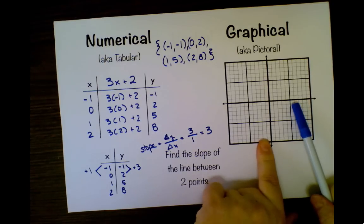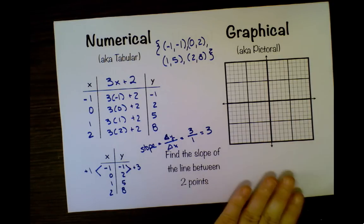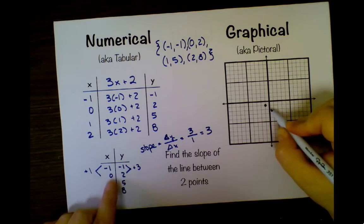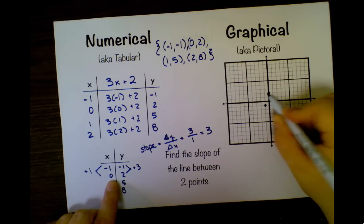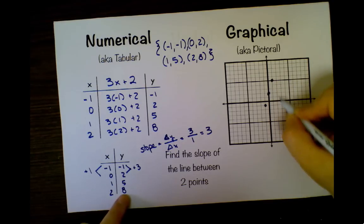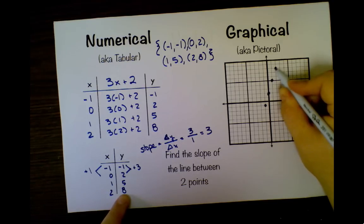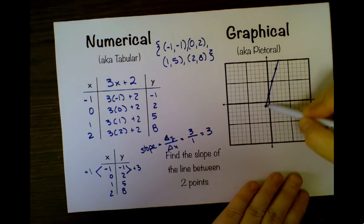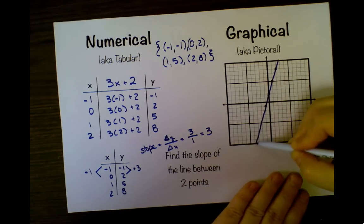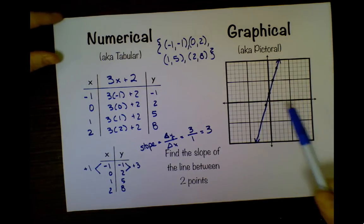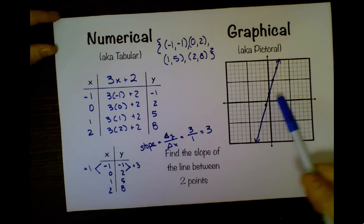Now graphically, I can plot these points. I'm going to plot the point (-1, -1), (0, 2), (1, 5), (2, 8), and draw a lovely line. Oh boy, I can't draw straight. This is a graphical representation of this line.